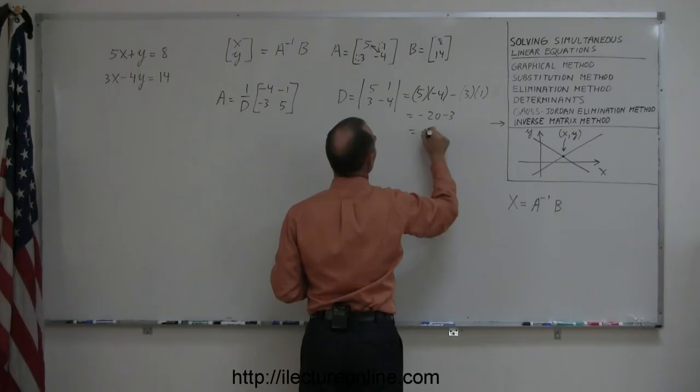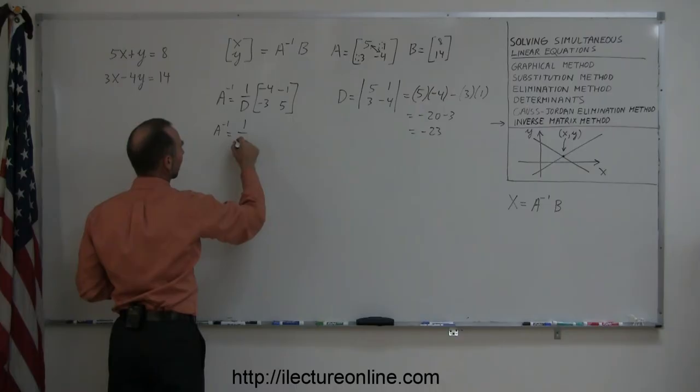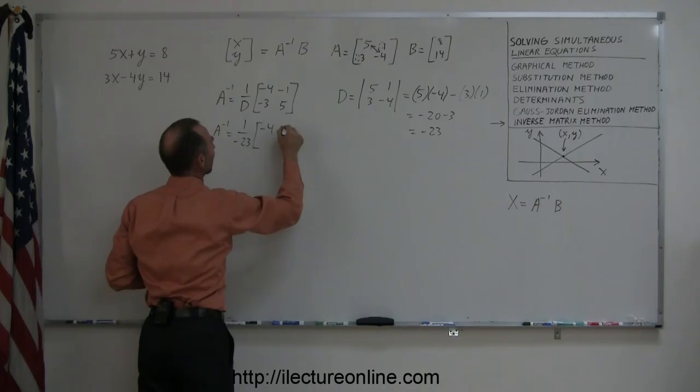So that means the inverse of A can be found by taking 1 over the determinant, which is minus 23, times, remember, these two elements replaced, so it becomes minus 4 and 5 down here, and the sign change of those two elements, which then becomes minus 1 and minus 3. There is the inverse of A.